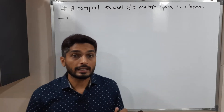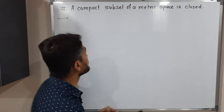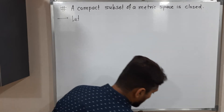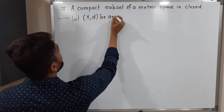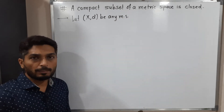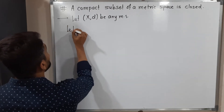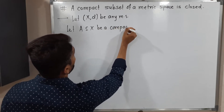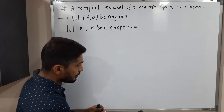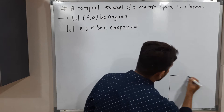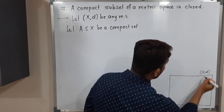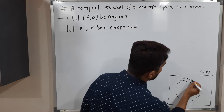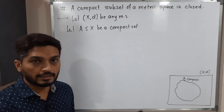So let me write the given information. Let Xd be any metric space. And it has a compact set — let me call it A. So let A subset of X be a compact set. Let me draw the diagram. So here we have a metric space Xd, and we have a subset A of X, and it is compact.